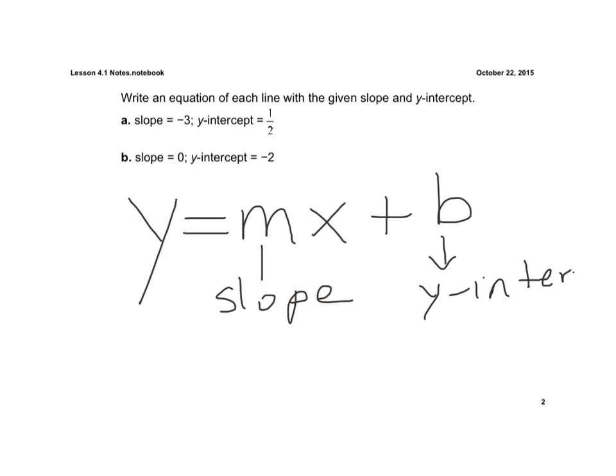So if we look at letter a, the slope is a negative 3, and the y-intercept is 1 half. So we go y equals, the slope is a negative 3 times x, plus the y-intercept of 1 half.